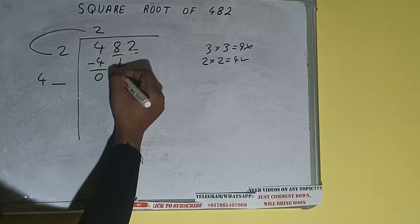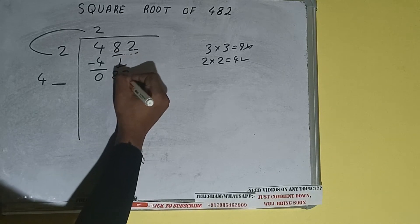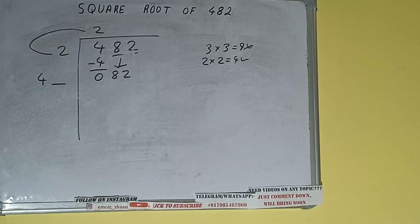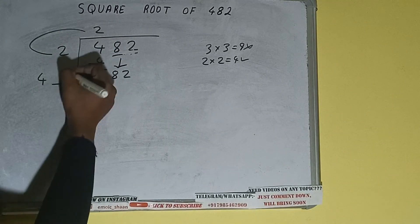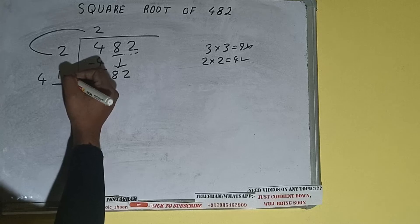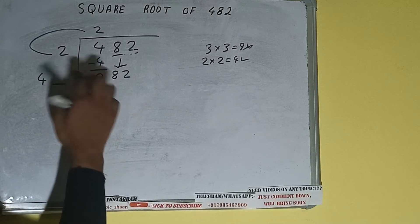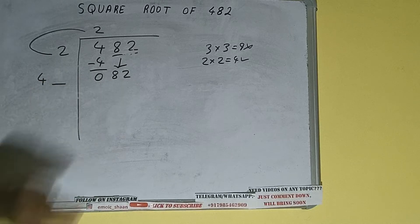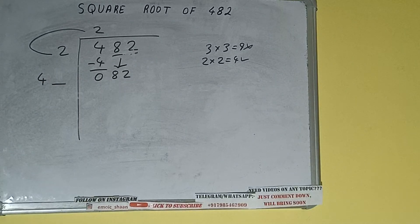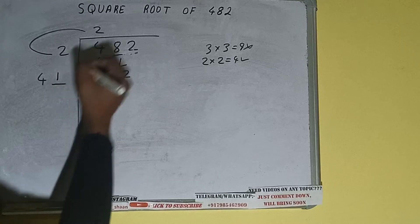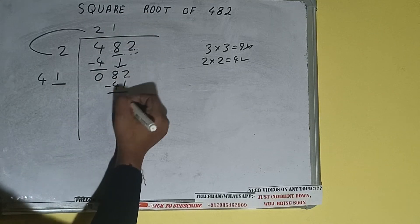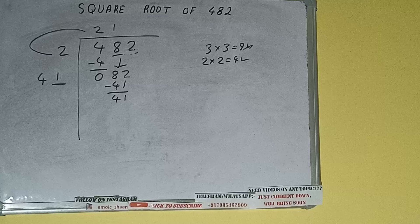Bring the next pair down and it will be 82. Now whatever number we write here we have to write here also. If we write 2 here and 2 here we'll be getting 84, which is greater than 82, so we cannot use 2. We'll be using 1: 1 here and 1 here, 41 subtract 41, and 0 will be left.